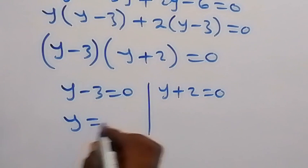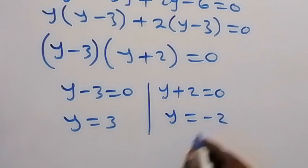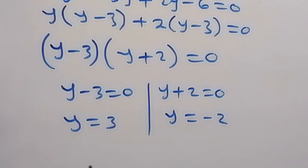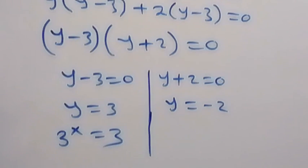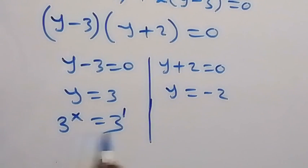So from here, y equals 3, and from here y equals minus 2. We represented y as 3 raised to power x, so we can say that 3 raised to power x is equals to 3. Then we can write this as 3 raised to power 1. The bases are the same, so we can equal the powers.